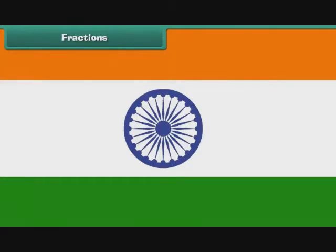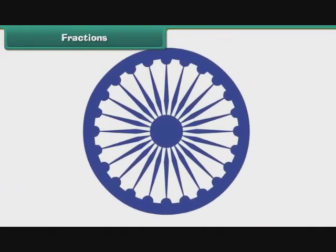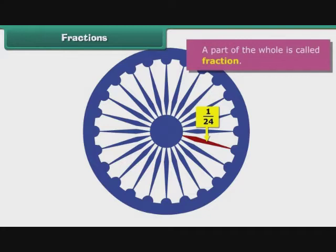Fractions. Consider the Ashoka Chakra. It has twenty-four spokes. The spokes divide the wheel into twenty-four equal parts. Each part is one-twenty-fourth of the whole wheel. A part of a whole is called a fraction.